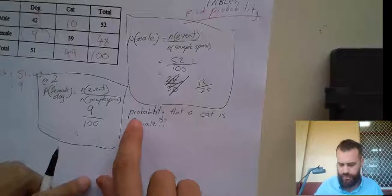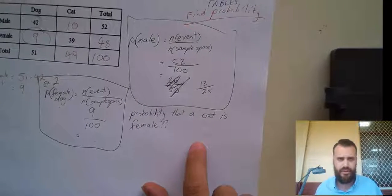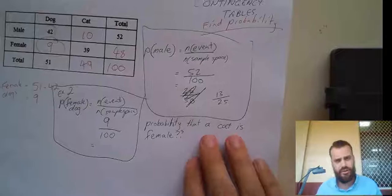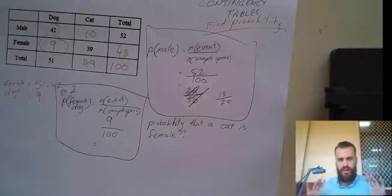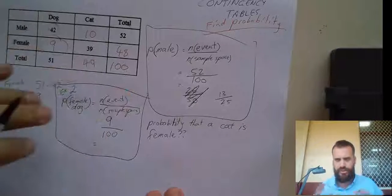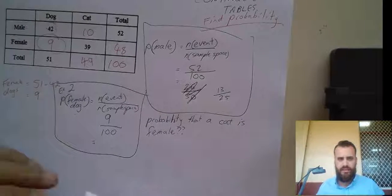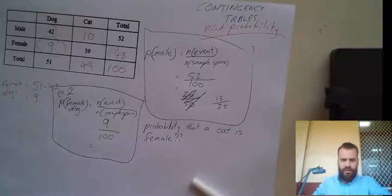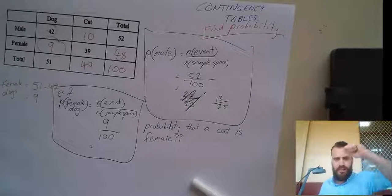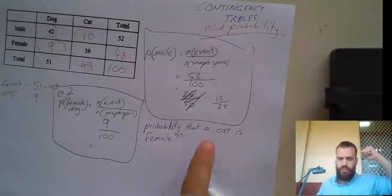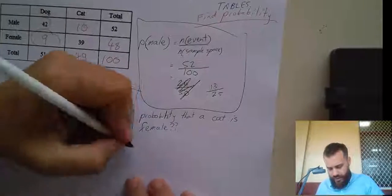There is one more example and this is the complicated one that you'll need to think about. Okay, this one says probability that a cat is female. Okay, so this is a different question. It's a different question because we're not considering the entire sample space. We're not considering all of the animals in our pen. The probability that a cat is female. So, let's say you went into the pen and you separated dogs to the left and cats to the right. And then you looked at the cats and you picked a cat up at random. What would the probability be that that cat was female?